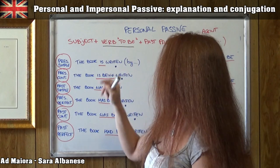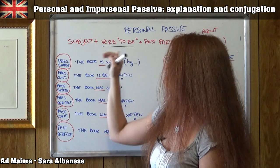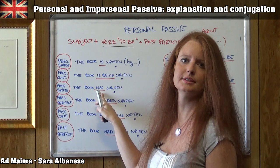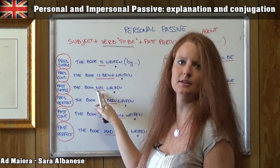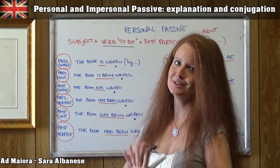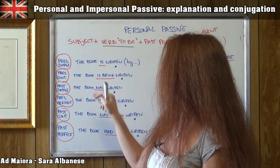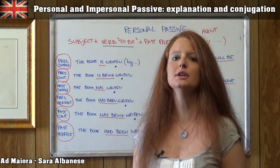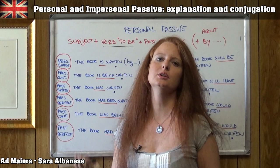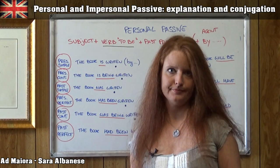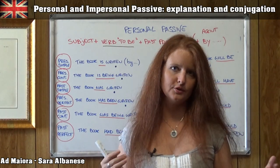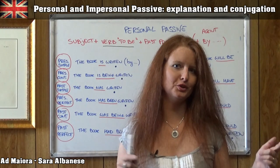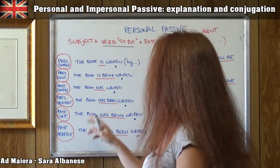Past simple — I always change just the verb 'to be.' This time it becomes: 'the book was written.' The book and 'written' are always the same; the only thing that changes is the verb 'to be.' In the past simple, the verb 'to be' is 'was' or 'were': I was, you were, he/she/it was, we were, you were, they were.